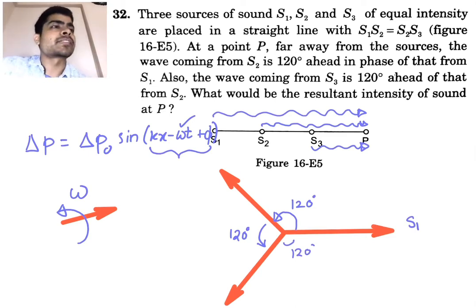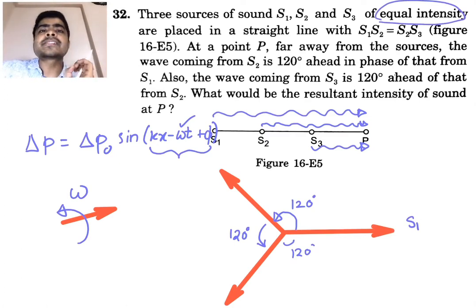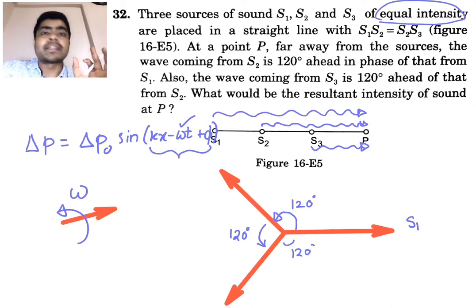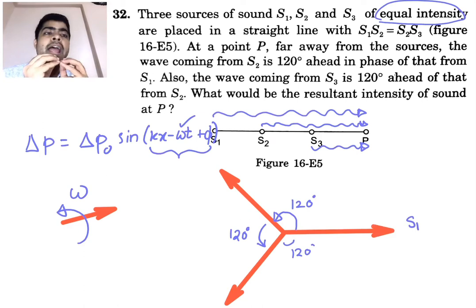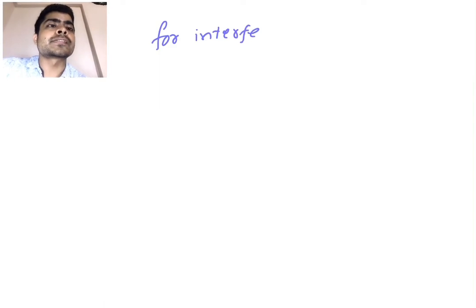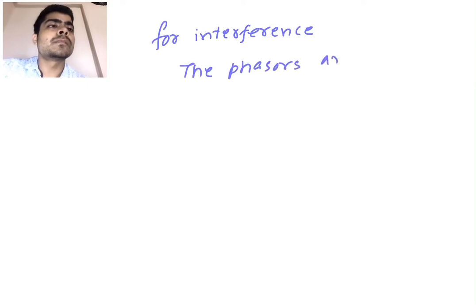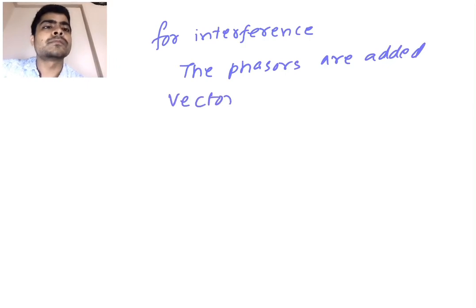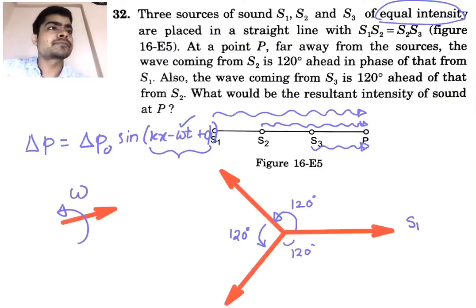The question says all three sources have equal intensity, which means their amplitudes are also the same. For interference calculations, phasors are added vectorially to obtain the resultant phasor. So we have the three phasors — let's name them S1, S2, and S3 — and we will add them vectorially.